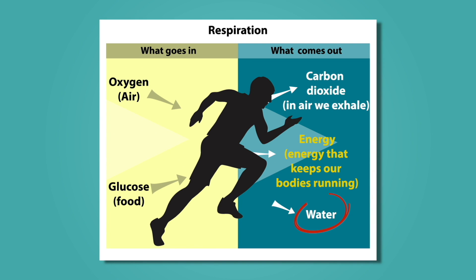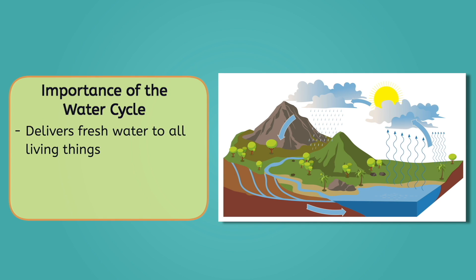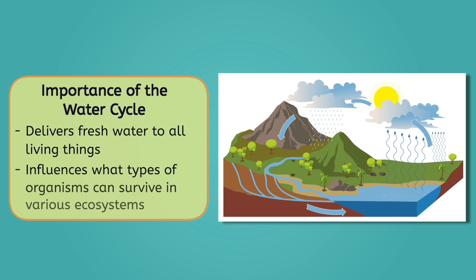Additionally, water vapor is released as a byproduct of cellular respiration when living things breathe. The water cycle delivers fresh water to all living things, making it invaluable to ecosystems. Additionally, some ecosystems receive more water from the water cycle than others, which influences which types of organisms can survive there.